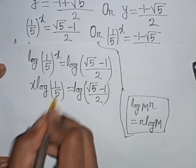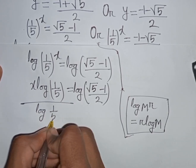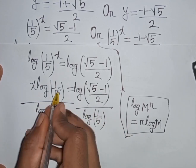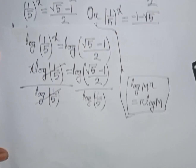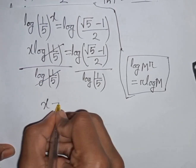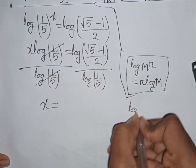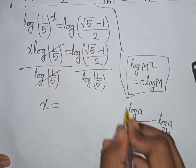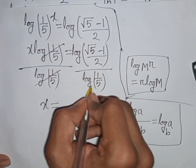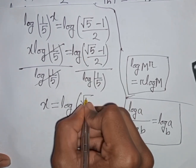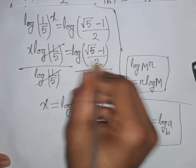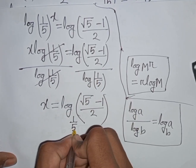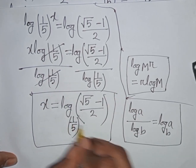Now we need the value of x, so divide both sides by log(1/5). The log(1/5) cancels, leaving x equal to log((square root of 5 minus 1)/2) divided by log(1/5). Applying the change-of-base formula, log a divided by log b equals log base b of a, so x equals log base (1/5) of ((square root of 5 minus 1)/2). This is our final answer.